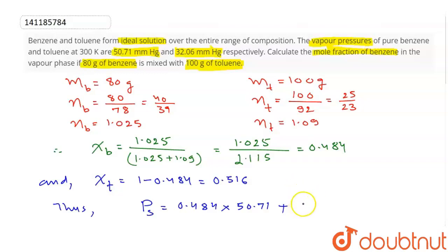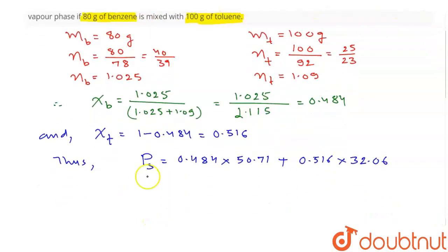Plus 0.516, this is the mole fraction of toluene, and we will multiply it with toluene's vapor pressure that is 32.06 mm of Hg. This calculation indicates the total pressure in this solution, that is 41.1 mm of Hg.